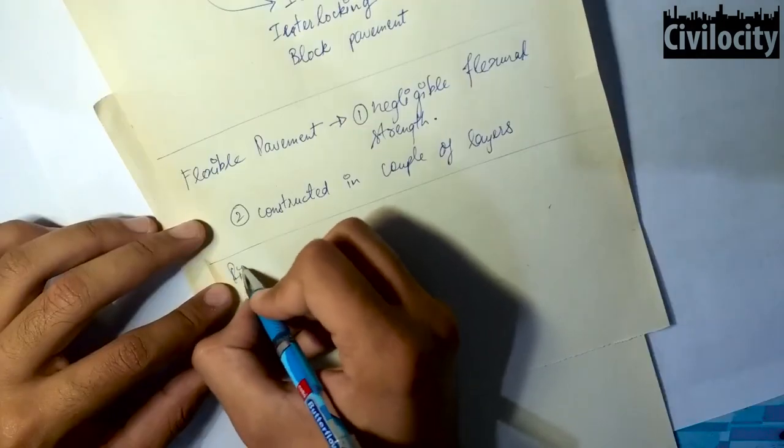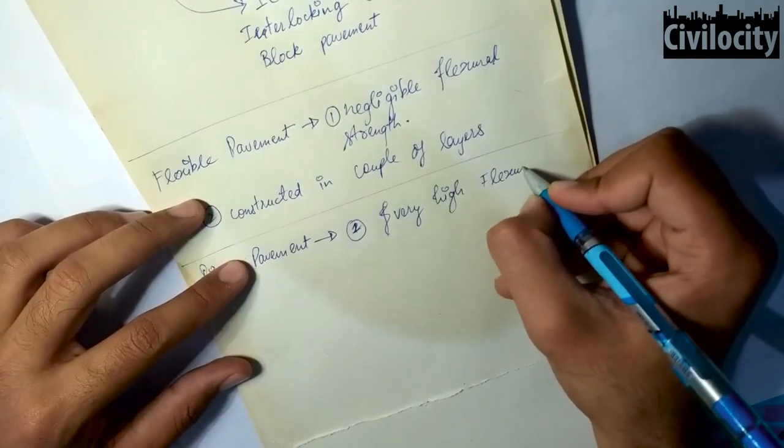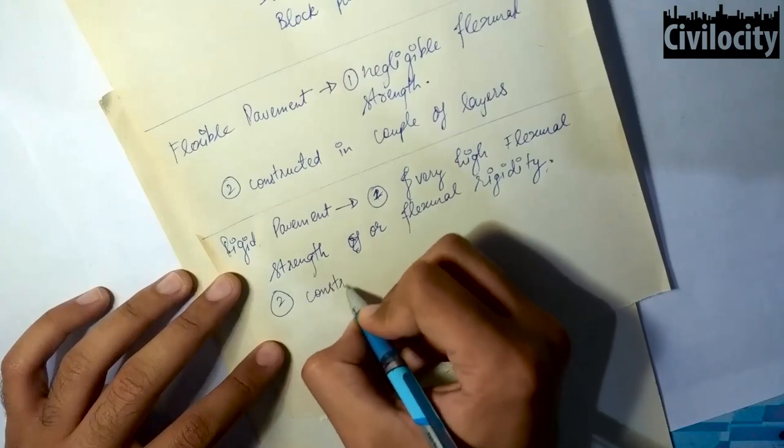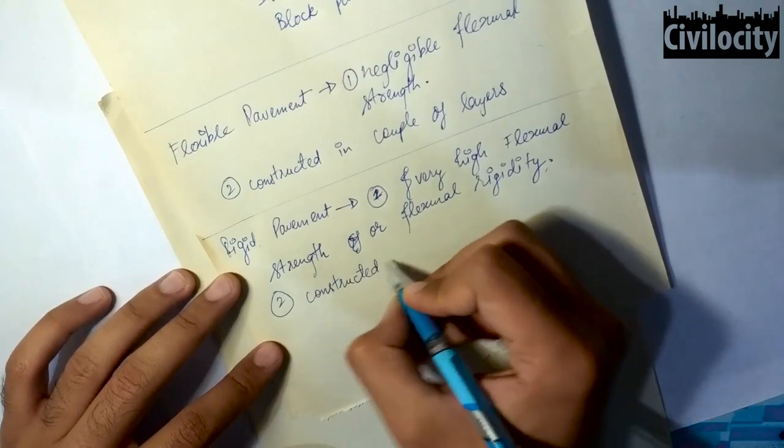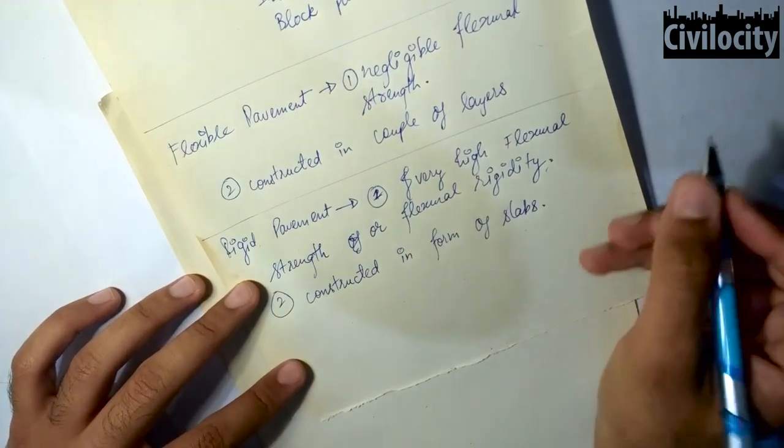While rigid pavement possesses very high flexural strength or flexural rigidity and they are constructed in the form of slabs. In this lecture we are not going into depth, but I'll try to give you short and point-to-point information regarding flexible pavements.